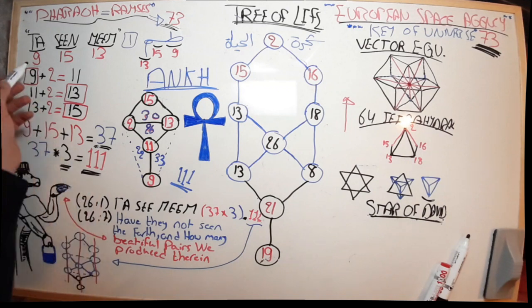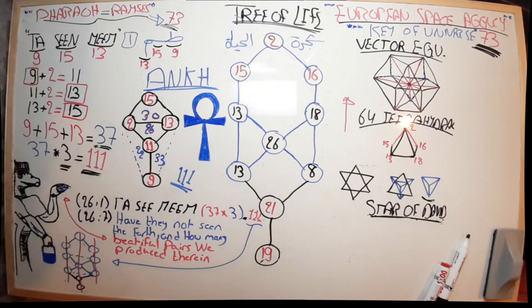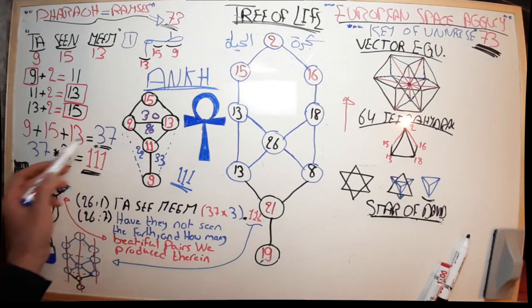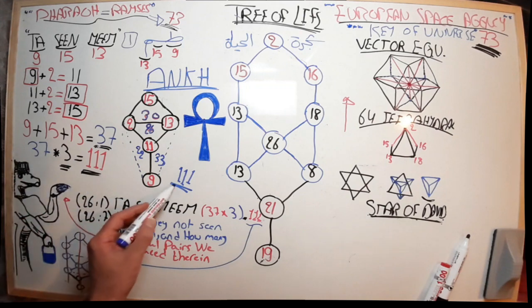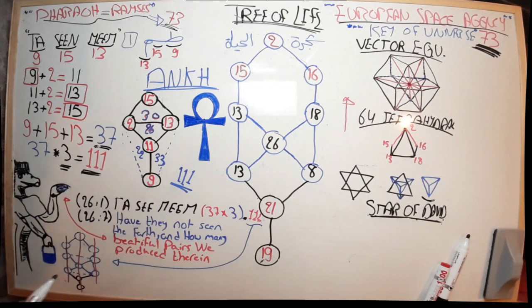Now this is the result of the equation that we derived from Ta-Sin-Meem. So what if we just simply took these numbers and summed them up? We are getting 9 plus 15 plus 13, which equals 37. What about 37 if we multiply it by 3? 111. Is that any coincidence? No.